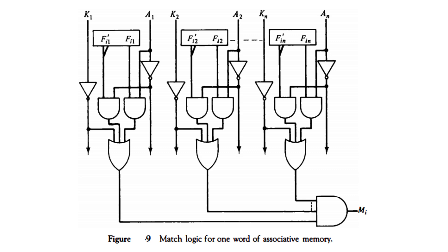We then AND together the outputs of all these bitwise comparison circuits for a single word. If the result is 1, it means all the unmasked bits matched and we have a match.